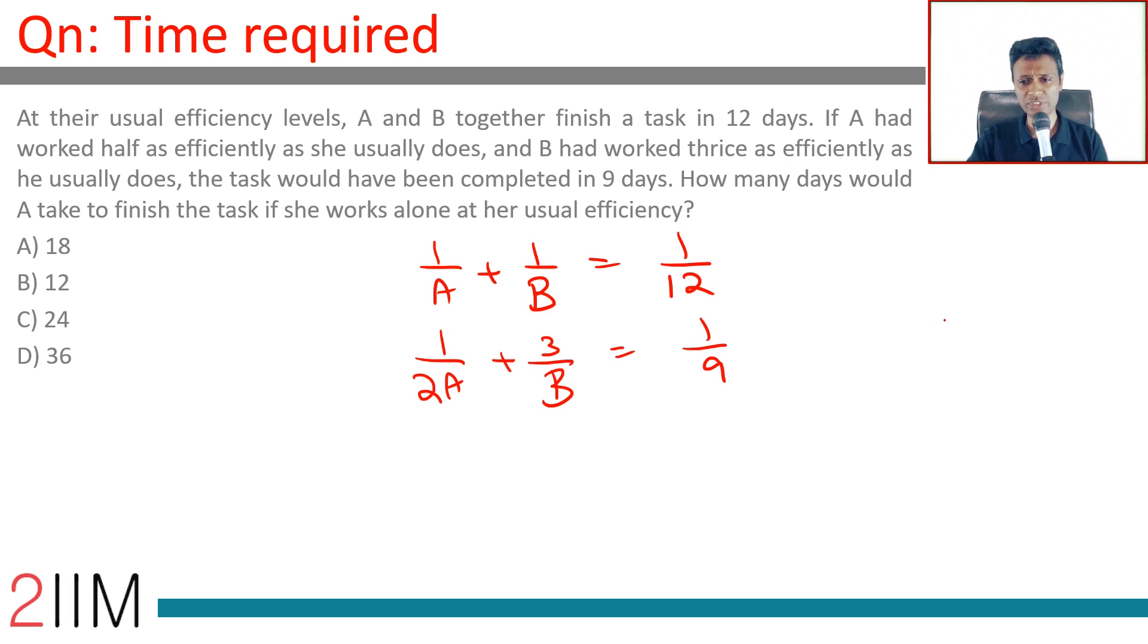Eliminate B, you're through. How do you eliminate B? Multiply this equation by 3: become 3/a, 3/b, 3/12, and then subtract. 3/12 is nothing but 1/4. We'll get 3/b.